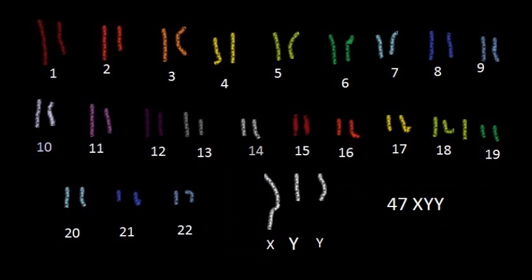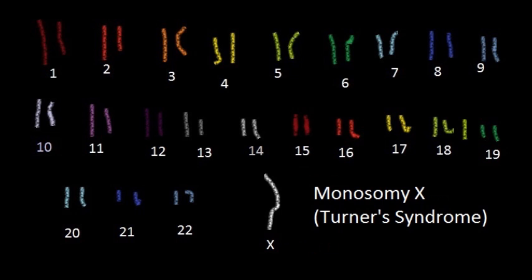47XYY syndrome happens when a male has two Y chromosomes. This condition results in abnormally tall individuals with very mild mental developmental disabilities. Individuals with 47XYY would be at most a year behind their peers and live a relatively normal life.